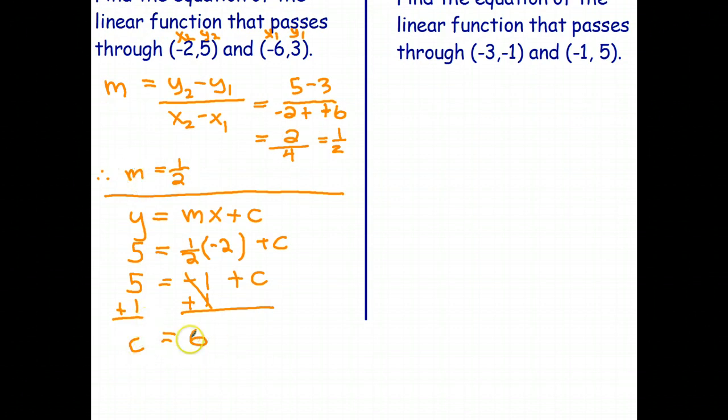So I found the gradient, I found the y-intercept. And now I can write my general equation, y equals mx plus c. And there it is. That's the equation of the line that passes through negative 2, 5, negative 6, 3.